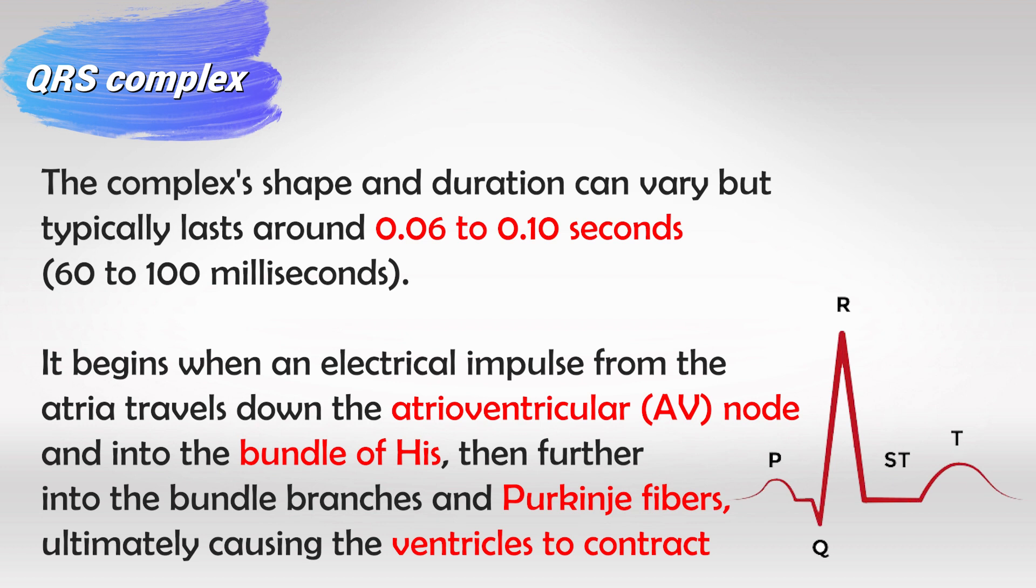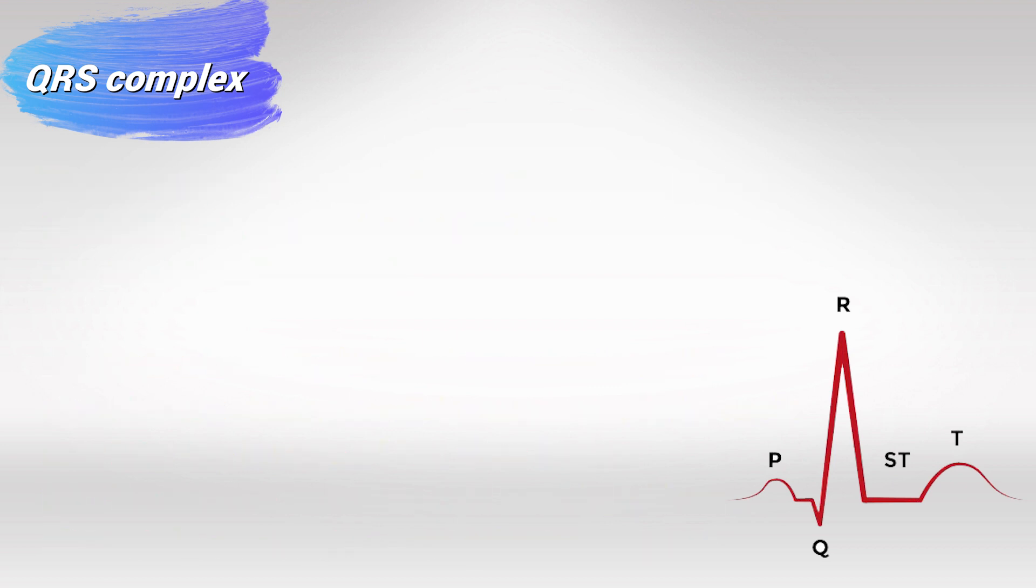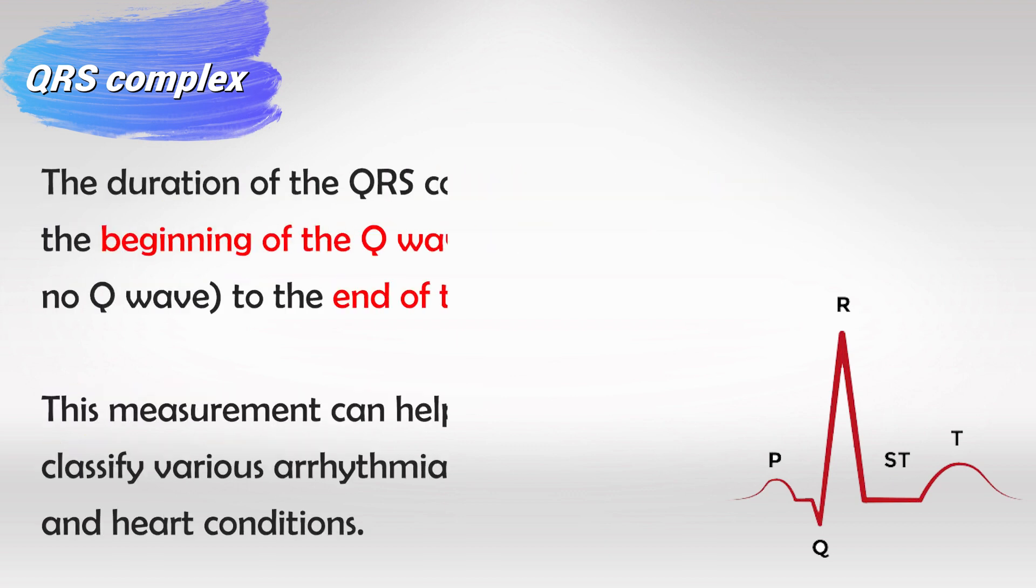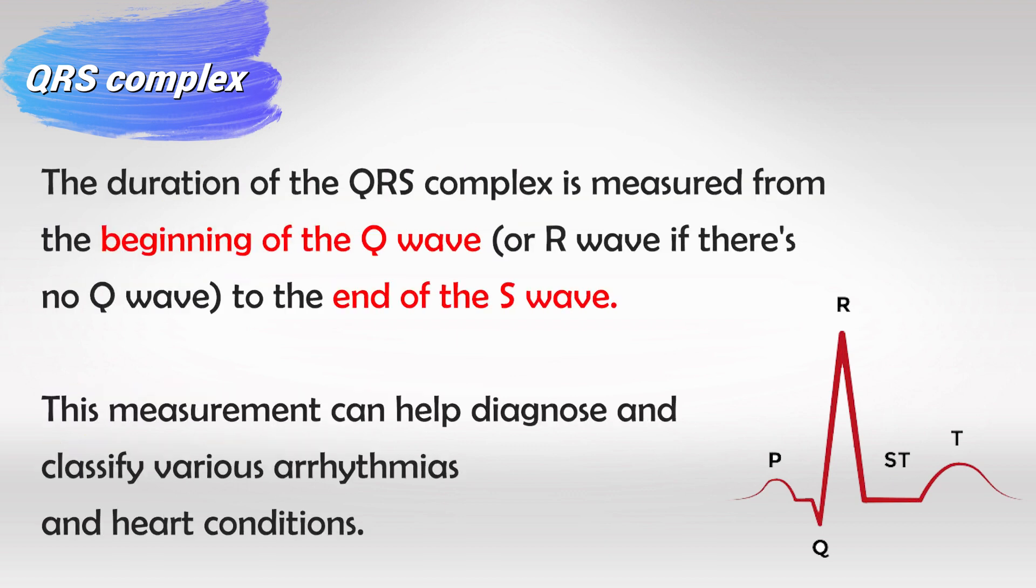The normal duration of a QRS complex is 60 to 100 milliseconds. The higher the QRS complex the stronger the contraction. This is simply the voltage. The higher the R wave of the QRS complex the higher the voltage and this indicates a stronger contraction. So remember the QRS complex indicates the contraction of the ventricles but it also hides the relaxation of the atrium.